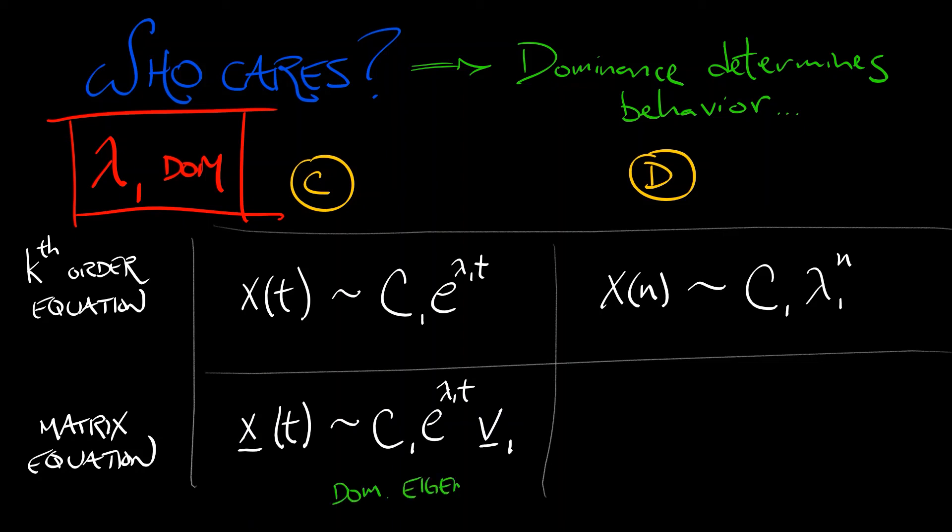the dominant eigenvector associated with that dominant eigenvalue. And in discrete time, we get the same thing. Your solution is asymptotically a constant times lambda 1t times v1.